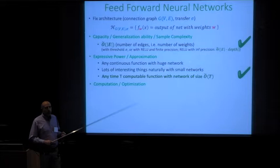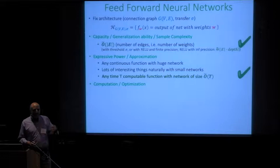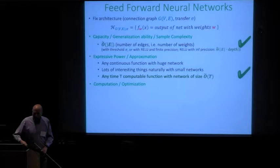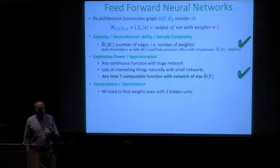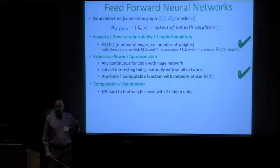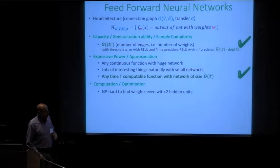So the story so far is compelling: neural nets are a great learning model — a universal learner. You can represent anything you'd ever want to learn using a small neural net, and you can fit it with sample size scaling roughly linearly with the runtime of your output function. The only thing we don't understand is the computational issue. If we had a method of fitting neural net parameters to minimize error on the data, we'd have a universal learner. The problem is we don't have such a method — fitting a neural network is NP-hard, even for a single hidden layer with two hidden units.